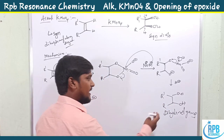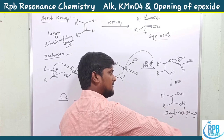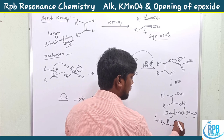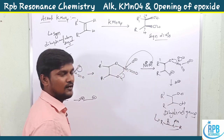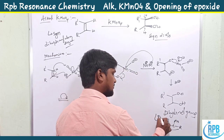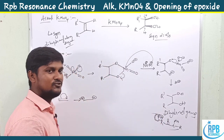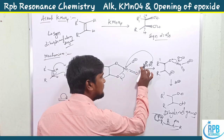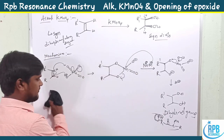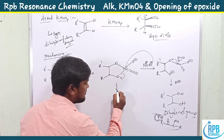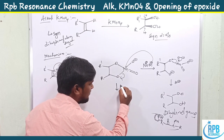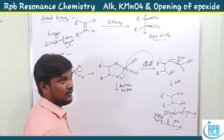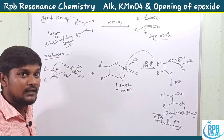These diols can undergo further oxidation. With another oxidation step, we get alpha-ketols — compounds with a double bond adjacent to an OH group. Further oxidation gives over-oxidation products. Instead of NaOH, if we use sodium acetate (AcONa) in acetic acid, the product changes.